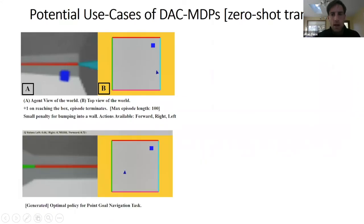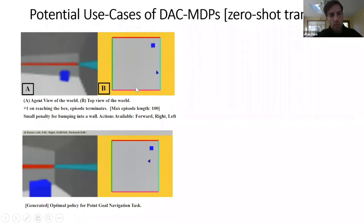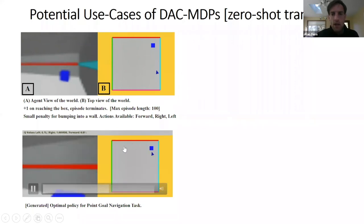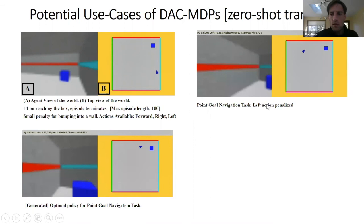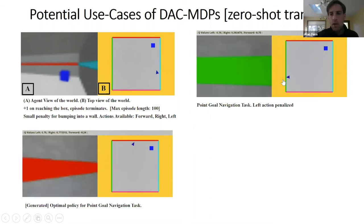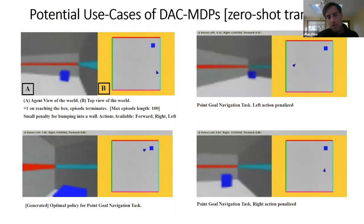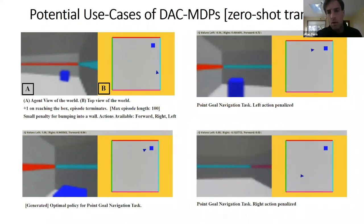One other example of what you can do with a planning-type approach: in a simple first-person 3D navigation environment, this is the optimal policy. Now if we say the 'left' action is broken, all we have to do is add a big penalty to the left action and re-solve the MDP — no need to re-learn from RL from scratch. The agent then adapts, turning left instead of right where it used to turn right. The RL community might call this zero-shot or one-shot learning; in the planning literature, we just call it planning.